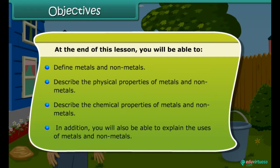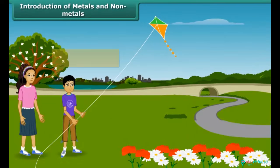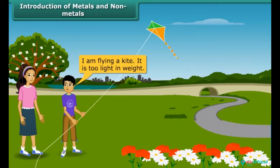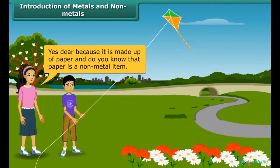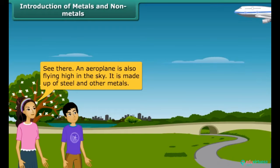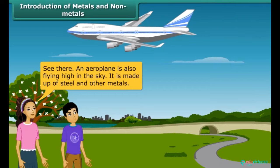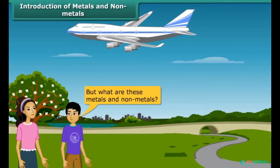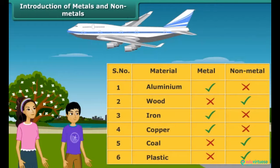Hey buddy, what are you doing here? I am flying a kite — it is too light in weight. Yes, because it is made up of paper, and paper is a non-metal item. See there, an aeroplane is also flying high in the sky. It is made up of steel and other metals. But what are these metals and non-metals?